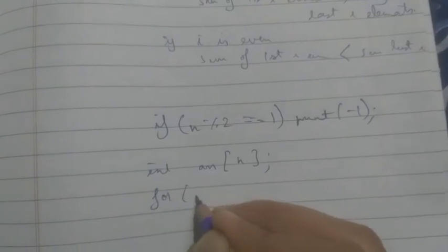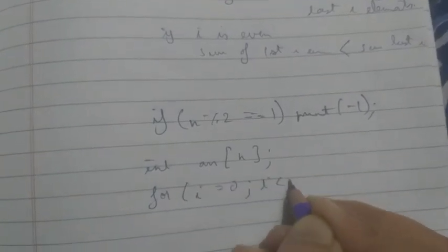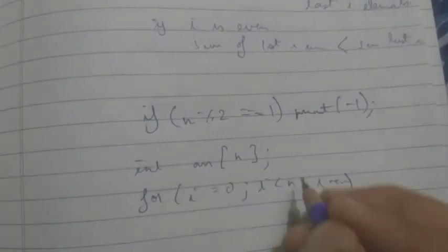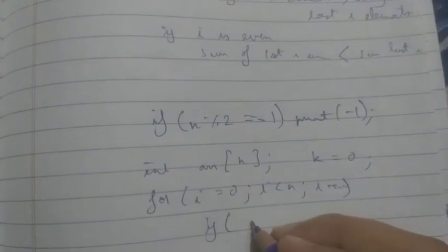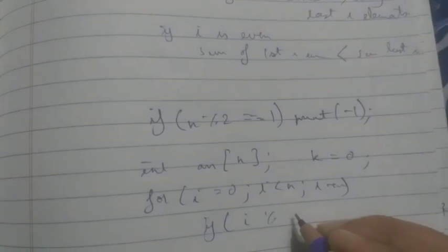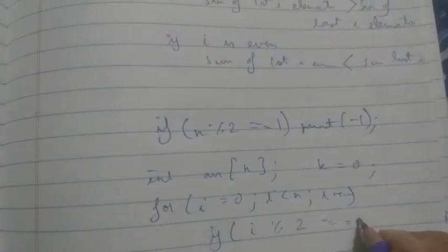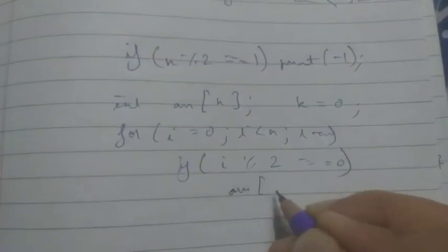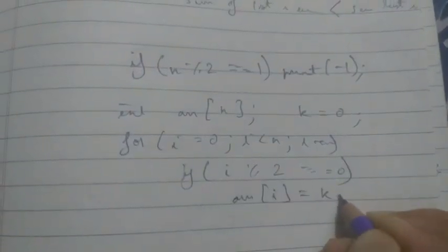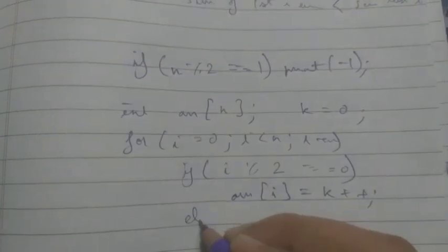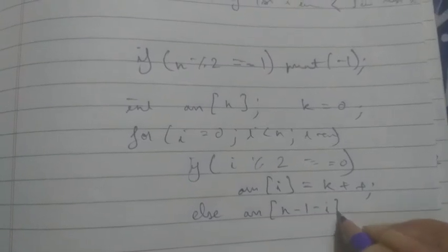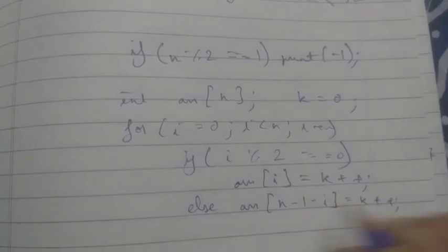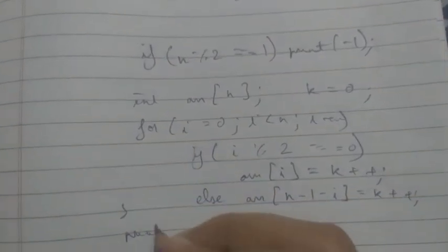Then run a loop from i equals 0 to i less than n. Let's say k equals 0. If i mod 2 equals 0, you can make array of i as k plus plus. Else you can make array of n minus 1 minus i as k plus plus. And then print the array.